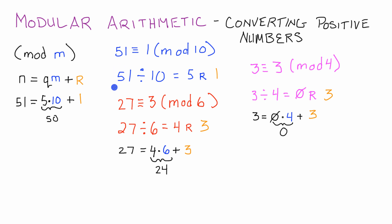In the next video, I'll be explaining how to convert negative integers to fall within the mod as well. Basically, when dealing with a negative number, we want to choose a negative q and then add a positive remainder, so that q times m plus the remainder equals our original negative number. So stay tuned for that video — thank you guys for watching, have an excellent day, and if you haven't already, don't forget to subscribe!